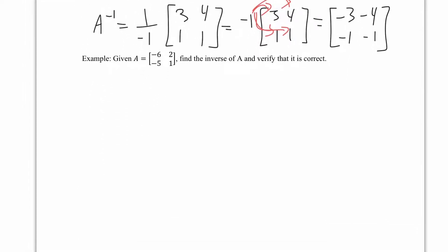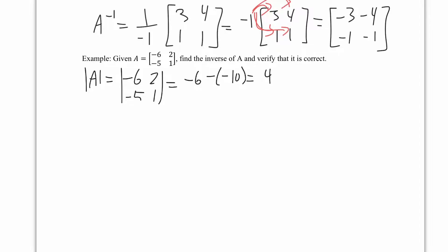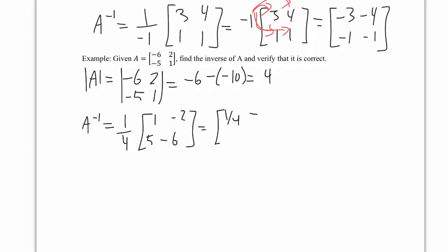Let's find the inverse of a new matrix and verify it. The determinant of A equals negative 6 minus negative 5 times 1, which is negative 6 minus negative 10, giving 4. So A inverse is 1/4 times the matrix [1, -6, -2, 5], which gives entries [1/4, -6/4, -2/4, 5/4]. To verify, we should multiply A inverse times A and get the identity.